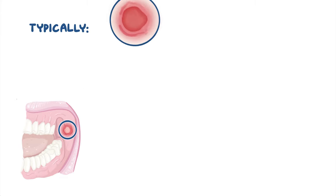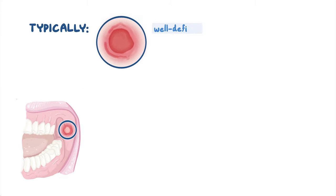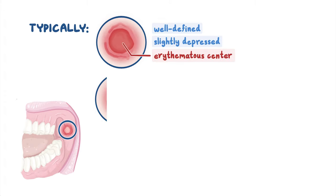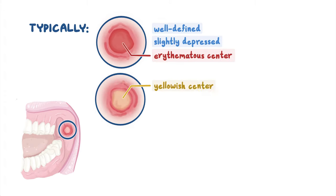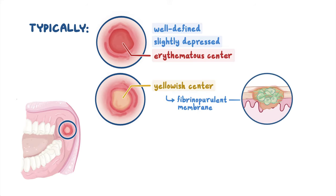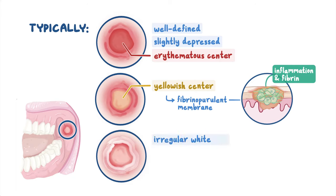Typically, an oral ulceration appears as a well-defined, slightly depressed lesion with an erythematous or reddish-to-yellow center. Sometimes the yellowish center represents a thick fibrinopurulent membrane that is a mix of acute inflammation and fibrin. This membrane can be removed by applying pressure. The ulcer may also have an irregular white halo with rolled borders. Although these features are common, other clinical features vary by type.